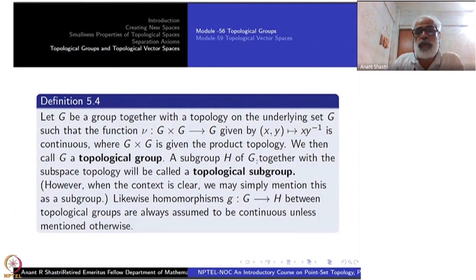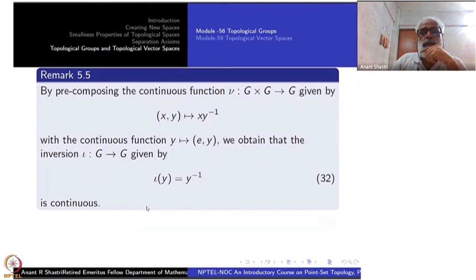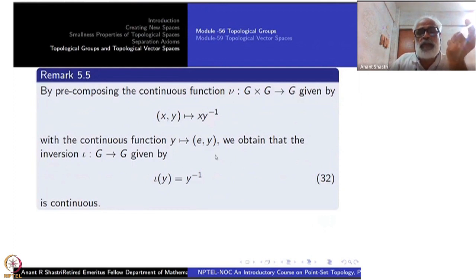A subgroup H of G together with the subspace topology is called a topological subgroup, with the same group operation. When the context is clear we may simply say subgroup. Homomorphisms between topological groups are always assumed to be continuous unless mentioned otherwise. Now, pre-composing the continuous function μ: G × G → G by the map y ↦ (e, y), which is a continuous function from G to G × G.